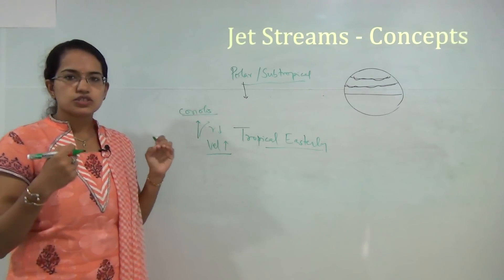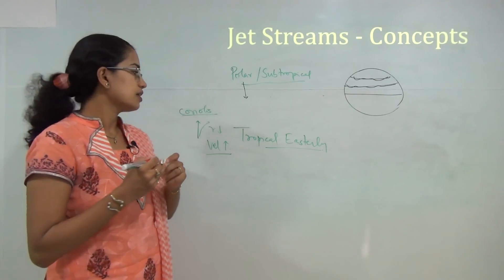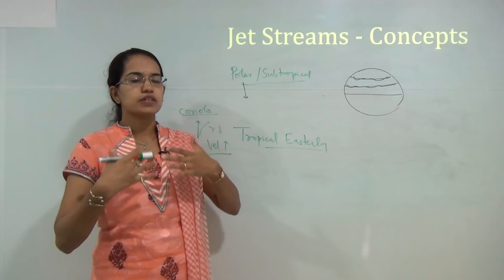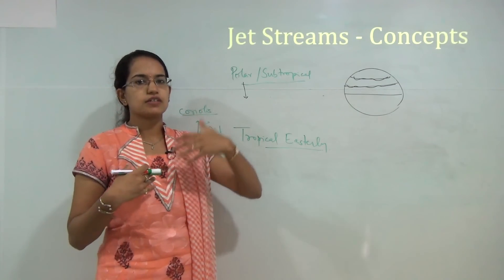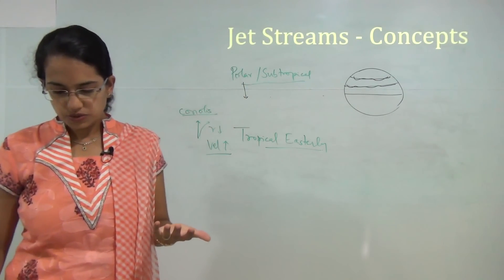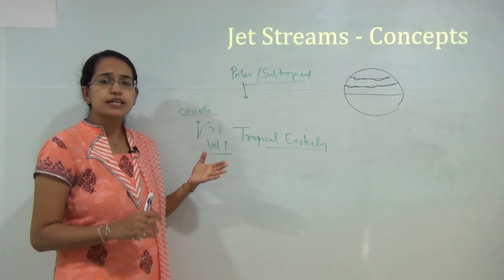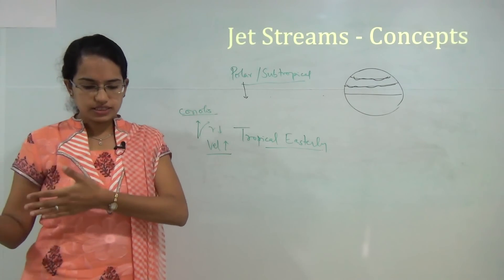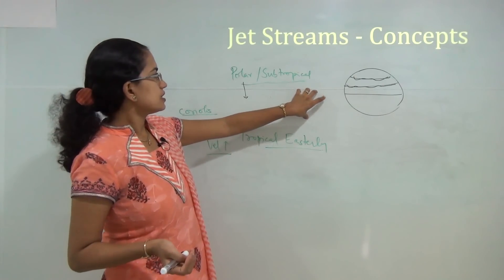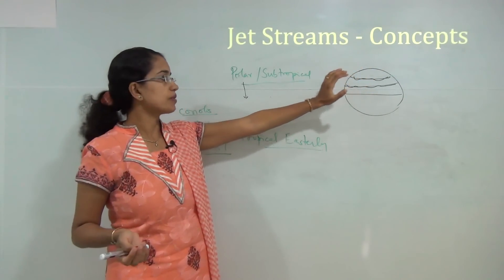These strong winds are blowing east but to an observer they appear as winds coming from the west, so they are also known as west winds or westerlies. They move towards the eastern direction, and this is how the polar jet streams are formed.